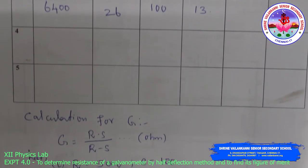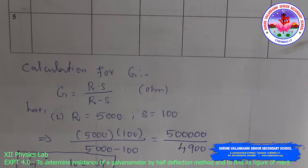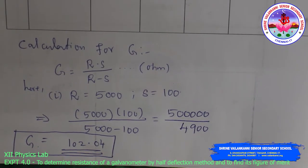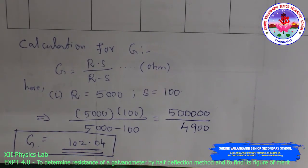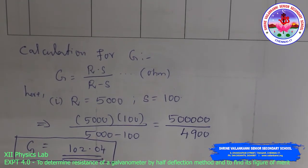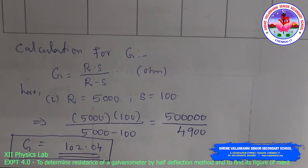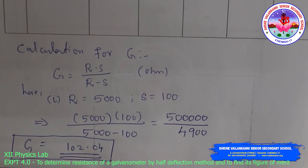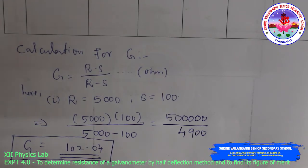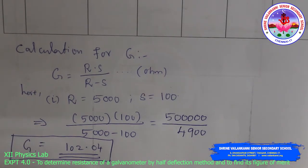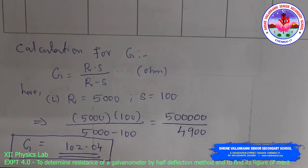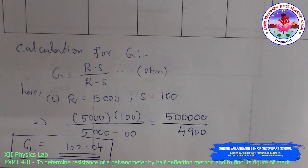For your convenience, I will show the calculation for one resistance. R = 5000, S = 100. Applying the formula G = R·S/(R − S), after simplification we get the value of G.